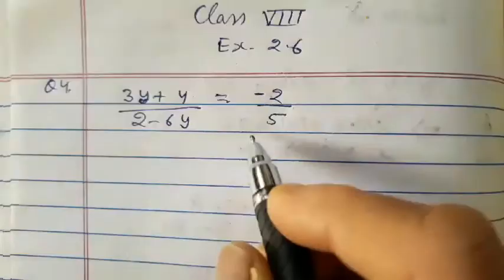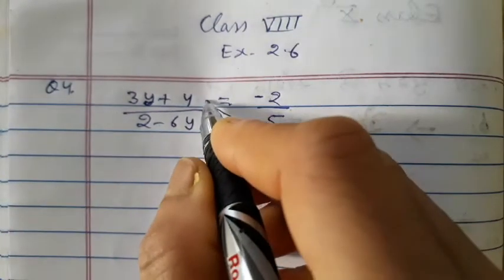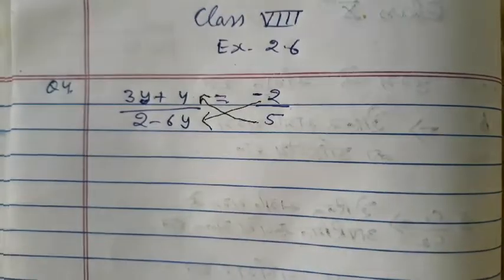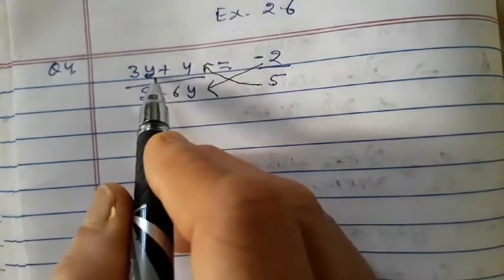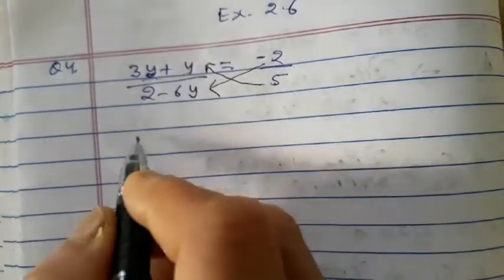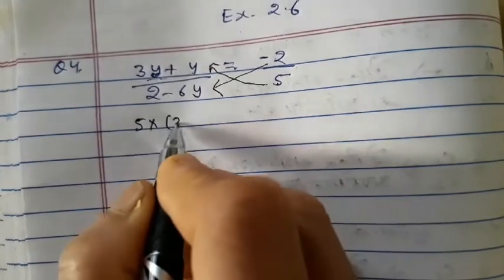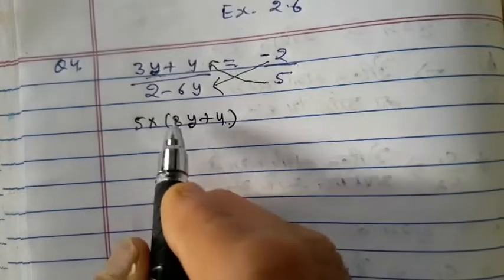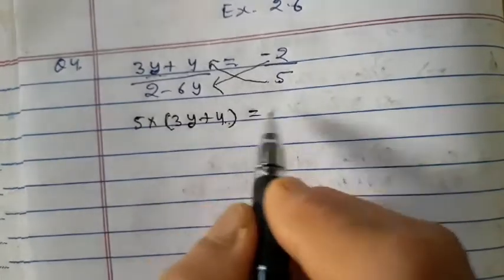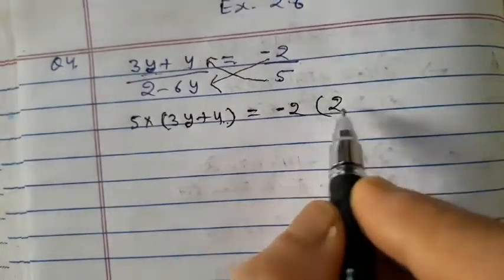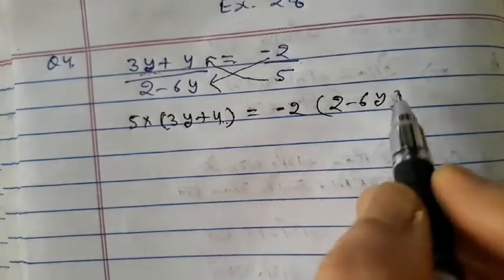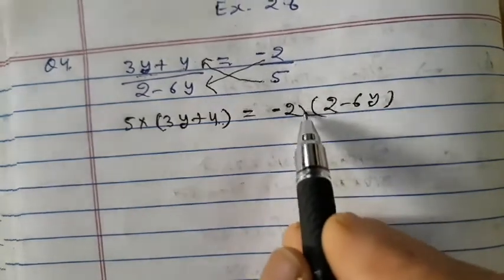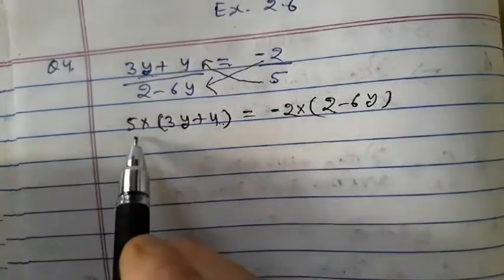Here we will cross multiply. 5 is multiplied on this side and minus 2 is multiplied on this side. 5 is multiplied by this expression — now 5 into (3y + 4), because this expression has 2 terms, therefore we put a bracket here. Now minus 2 into (2 − 6y); this expression also has 2 terms, so we put a bracket here.